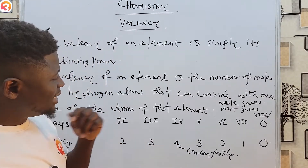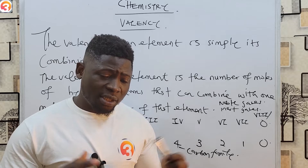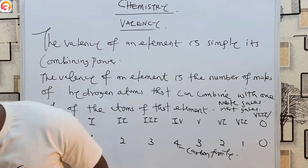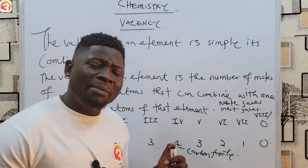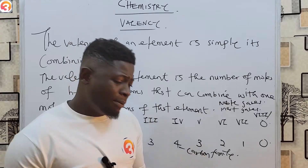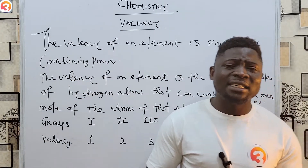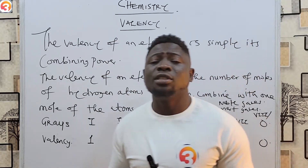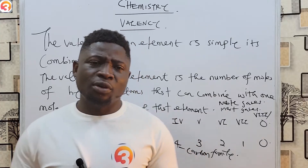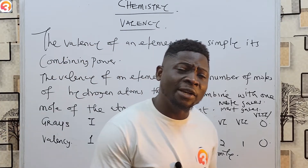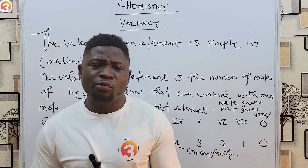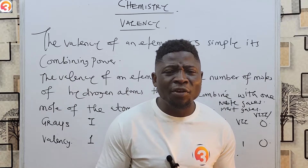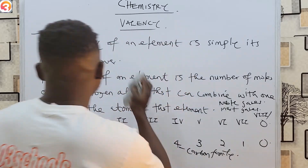There is another important thing we need to know before we talk about predicting the formula of a compound: some elements have variable valency. What I mean by variable valency is that they can have more than one valency. This happens because of their electronic configuration — as electrons change shells, elements sometimes lose different numbers of electrons, giving them more than one valency.